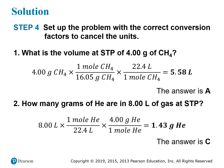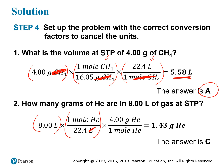Putting everything in so the units cancel: for the first problem, starting from grams, the molar mass cancels grams to give moles of methane, and then the molar volume cancels moles to give liters — we get 5.58 liters, answer A. For the second question, starting from liters, the molar volume cancels liters to give moles, and then the molar mass cancels moles to give grams — we end up with 1.43 grams of helium, answer C.